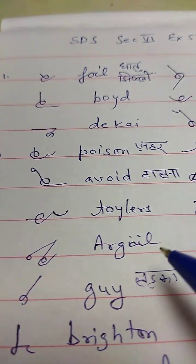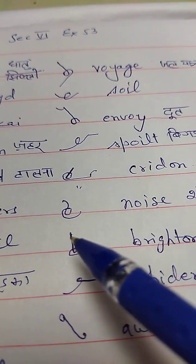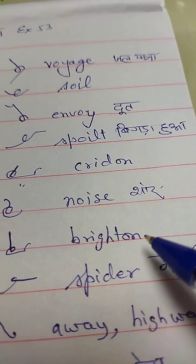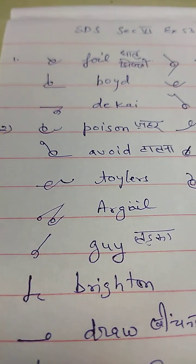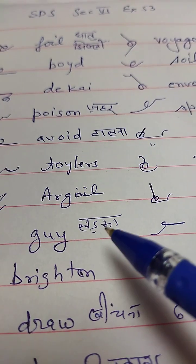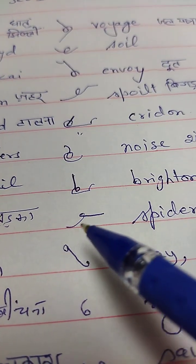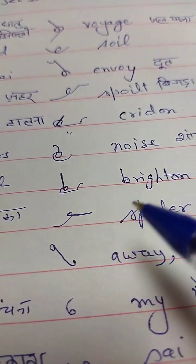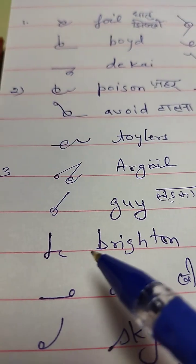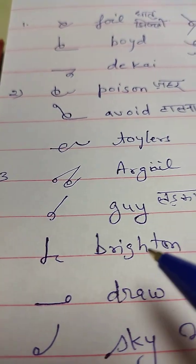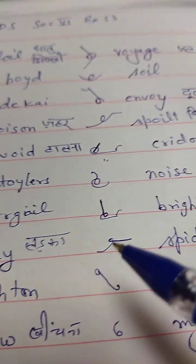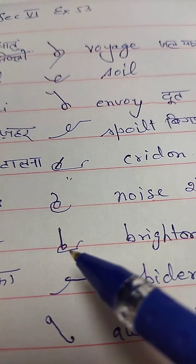Arigail. Brighten — B-R-I-G-S-T-U-N. Guy — Ladka. Spider — Makdi. Brighten — this is Brighten, or this is also Brighten.